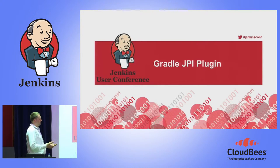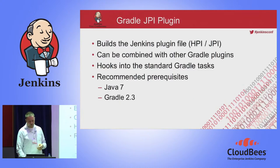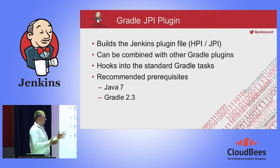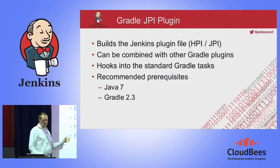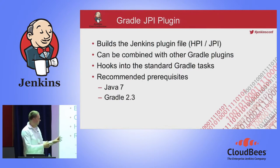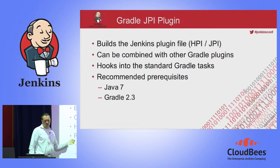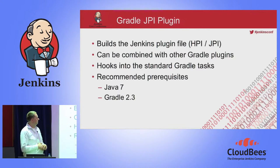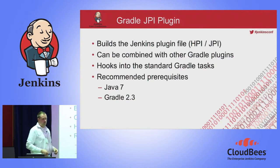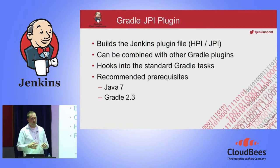When you decide to use Gradle, you need a plugin to package the Jenkins plugin file — the HPI or JPI file. The Gradle JPI plugin does that for you. It's a standard Gradle plugin which hooks into the Gradle lifecycle and does all the magic. You should use Java 7 for your build, and you have to use Gradle 2.3, mainly because I had to use some Gradle internal APIs to emulate how the Maven HPI plugin works. That's currently only possible using internal Gradle APIs available in 2.3, and it will probably break with newer versions since the internal API is subject to change.